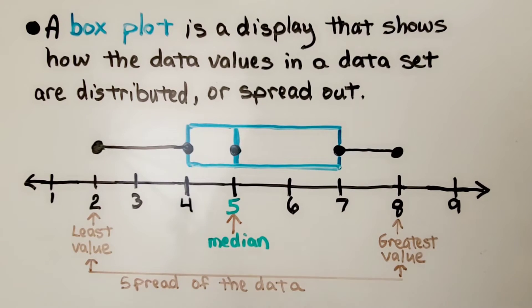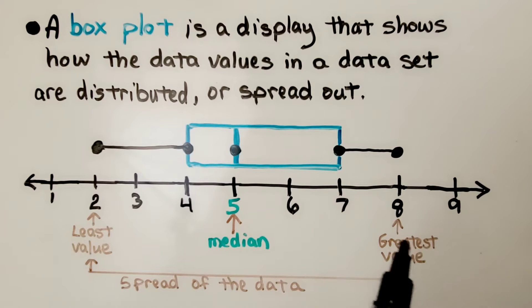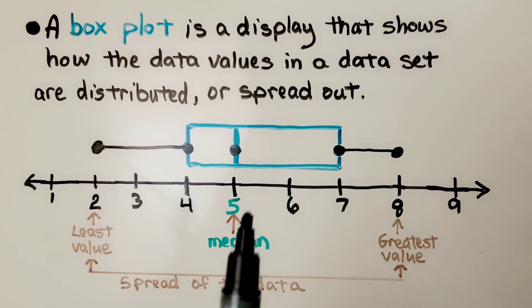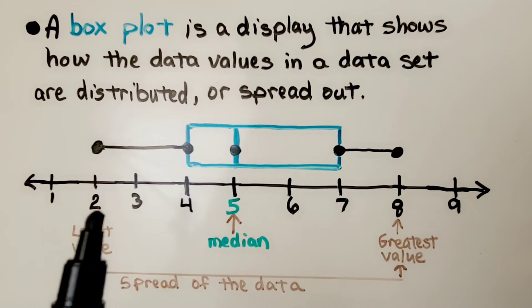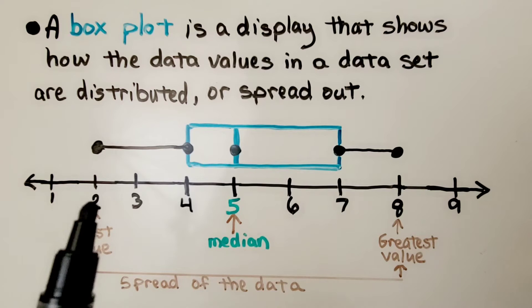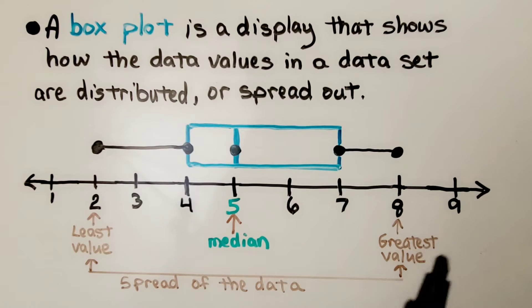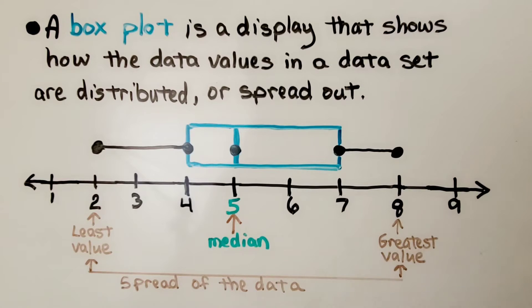We have a least value, a greatest value, and a median value. Because our values go from 2 to 8, the spread of the data is 2 to 8.